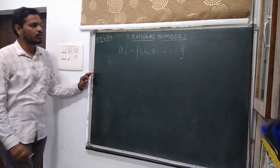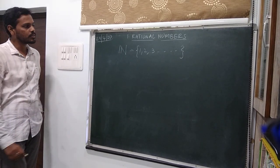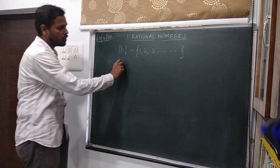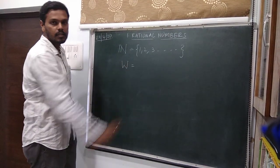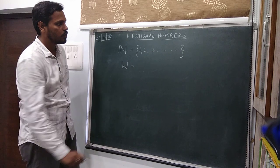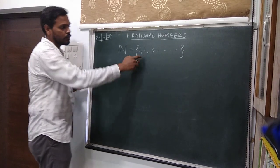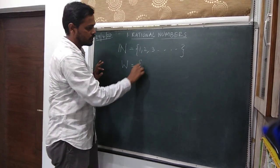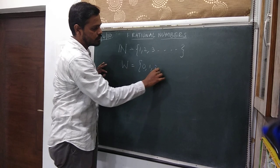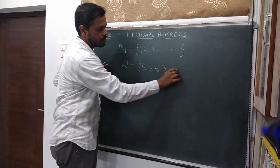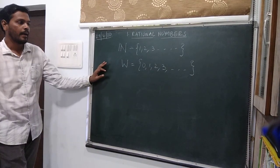The next collection of numbers which we discussed after natural numbers is your whole numbers. This collection is formed by joining 0 to the set of natural numbers. So these are 0, 1, 2, 3 and so on.